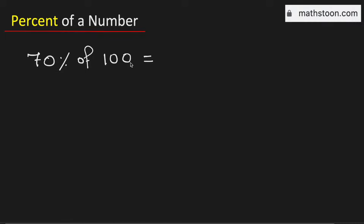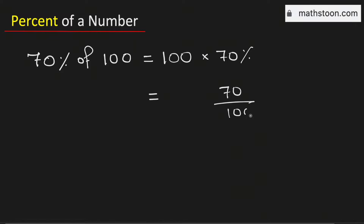Let us find 70 percent of 100. To do this, we will multiply 100 by 70 percent. We know that 70 percent is the same as 70 over 100, and this 100 has a denominator of 1.